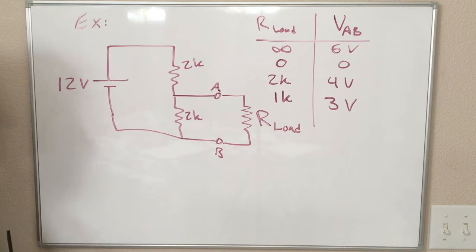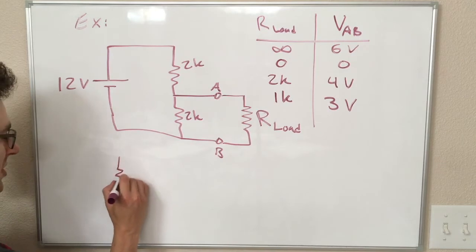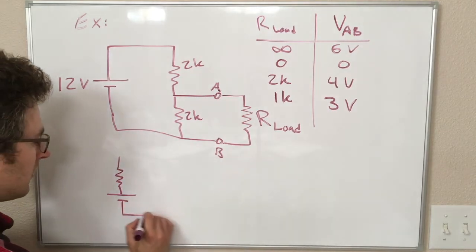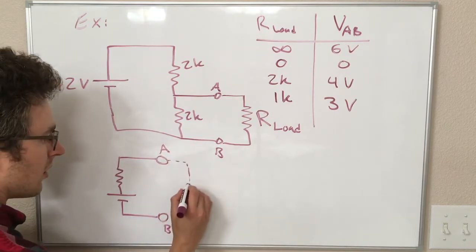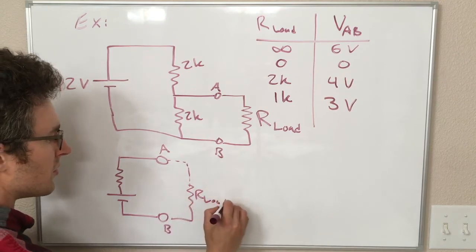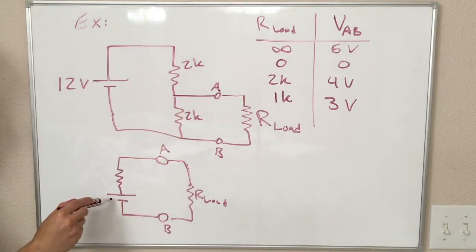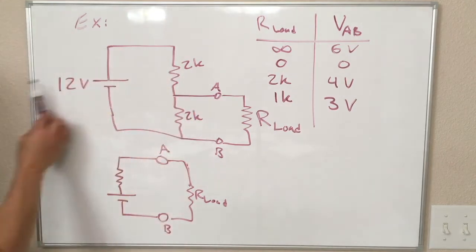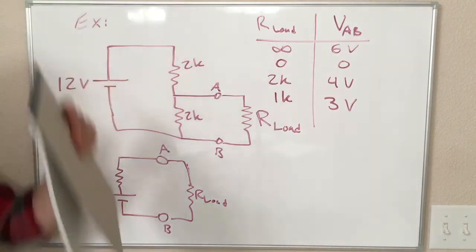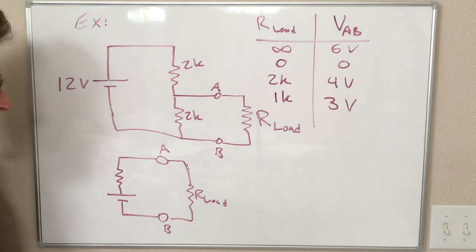So why have I done all this? The reason is we are claiming that this is equivalent to something that looks like the following, where we still have points A and B, and we're still connecting our load resistor to that. But we don't have this more complicated thing over here. We just have a single voltage source and a single resistor. So the crazy thing is, this is true. It is equivalent to this, no matter how complicated things get on the left. You can have a circuit that takes up the whole wall, and it still is equivalent to this, as far as points A and B are concerned.